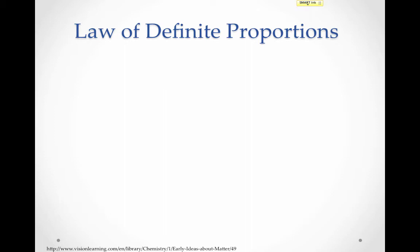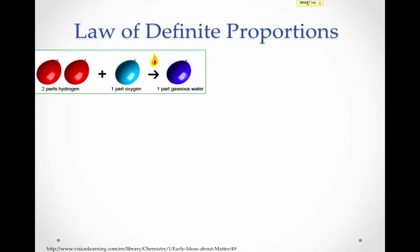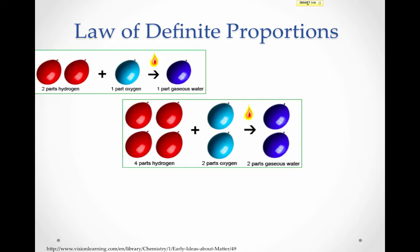Likewise, if we combine samples of hydrogen and oxygen, it was noticed that it was always necessary for two parts of hydrogen and one part of oxygen to form one part of water vapor or gaseous water. Notice here we have two equal-sized balloons of hydrogen and one balloon of oxygen forming one balloon of water. If we doubled the amount of hydrogen, we also had to double the amount of oxygen and we would make double the amount of water. Still the proportions are the same: two parts hydrogen to one part oxygen gives you one part water.